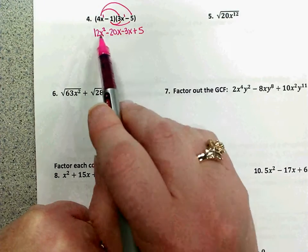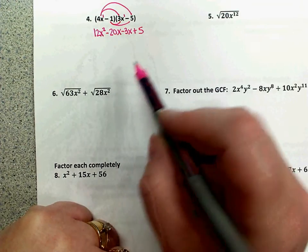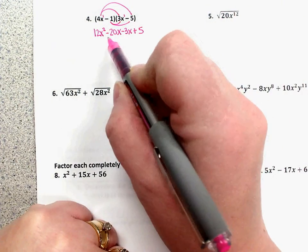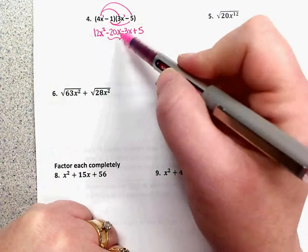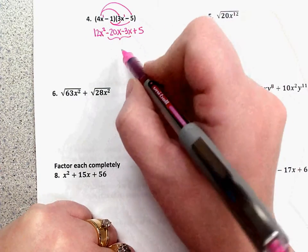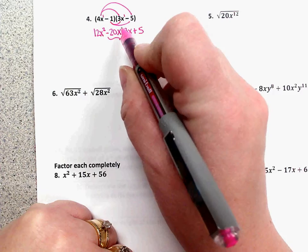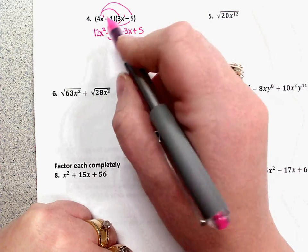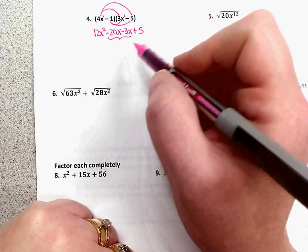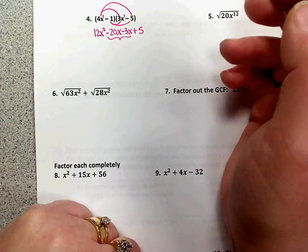So now we have our four terms, but remember you will typically have like terms here in the middle. These both have an x. Remember when you add, you don't add exponents. That's only when you multiply. So if you add cats with more cats, you have cats. You don't have cats squared.